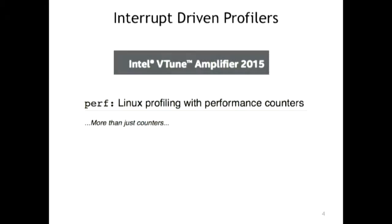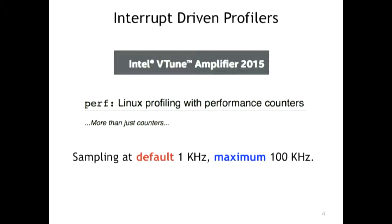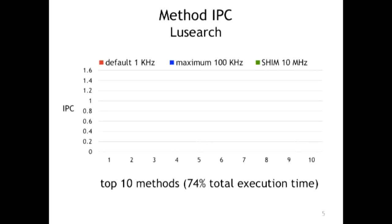If you have money you can buy VTune, or you can use perf. Perf gives you hardware counters. The sampling frequency by default is one kilohertz — 1000 points per second — while your CPU is running on gigahertz. The maximum is 100 kilohertz. These are the current tools; you plug them in and figure out what happened.